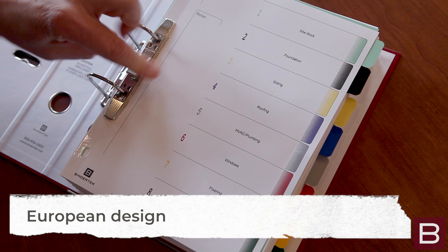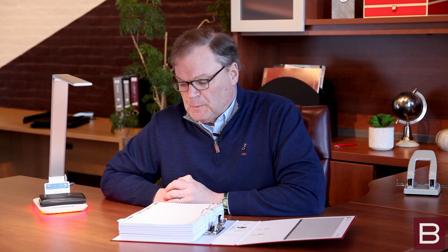When you want to get into your file, the first thing you do is open the compressor bar and flip it out of the way. This demonstration binder is set up for the construction of a building.